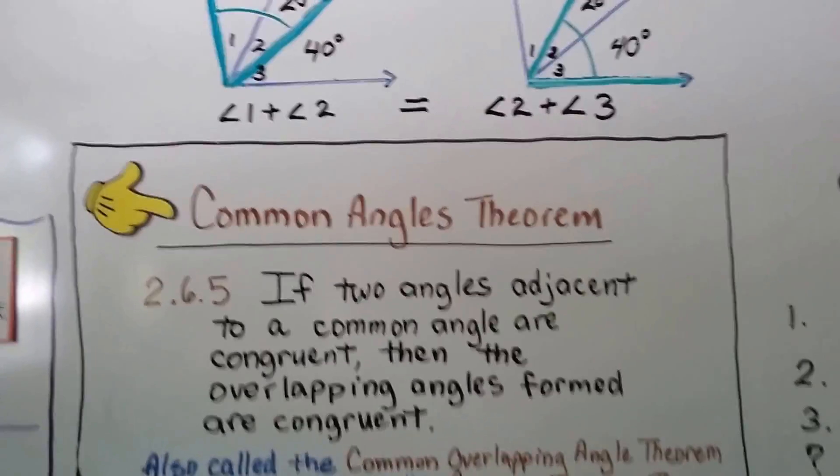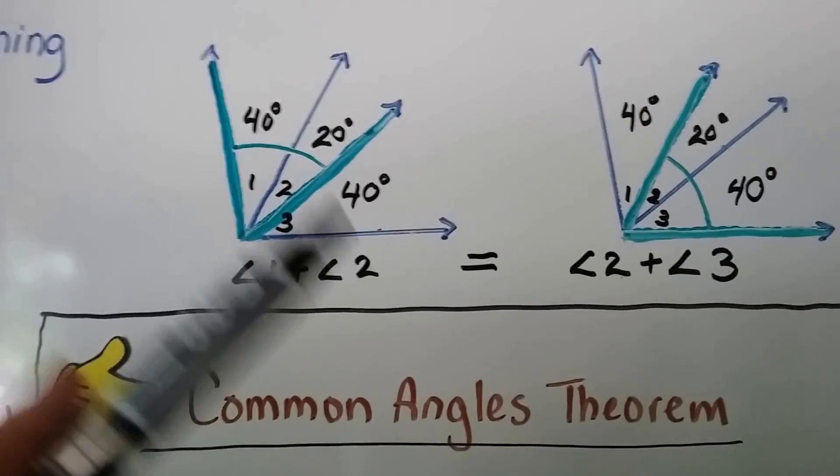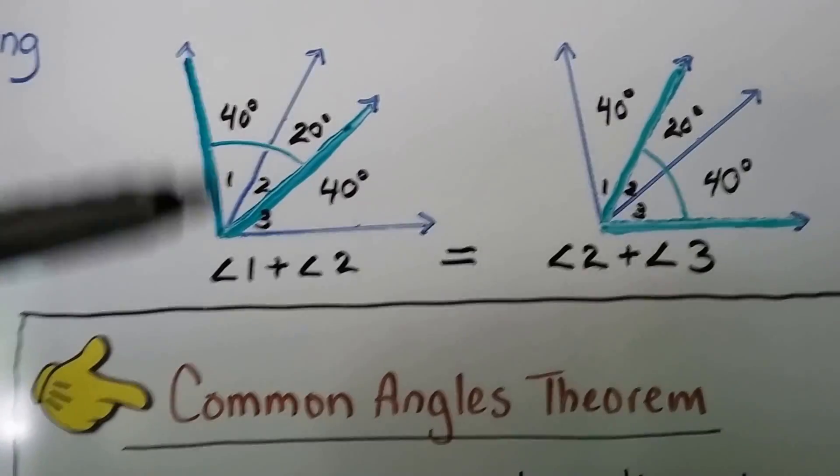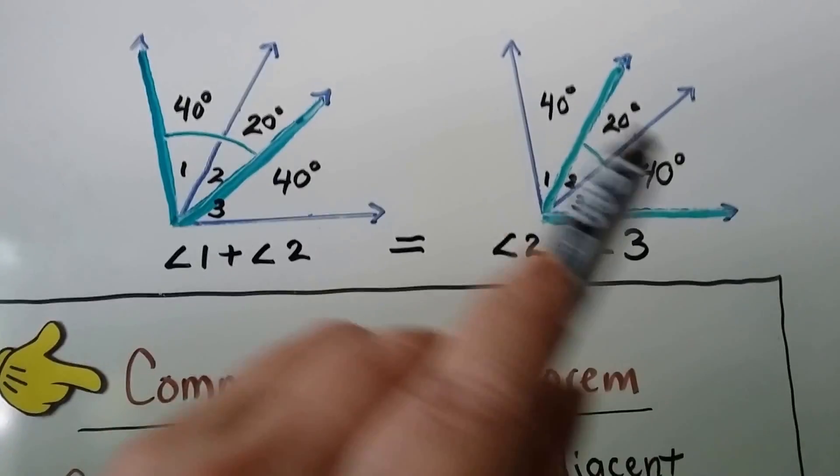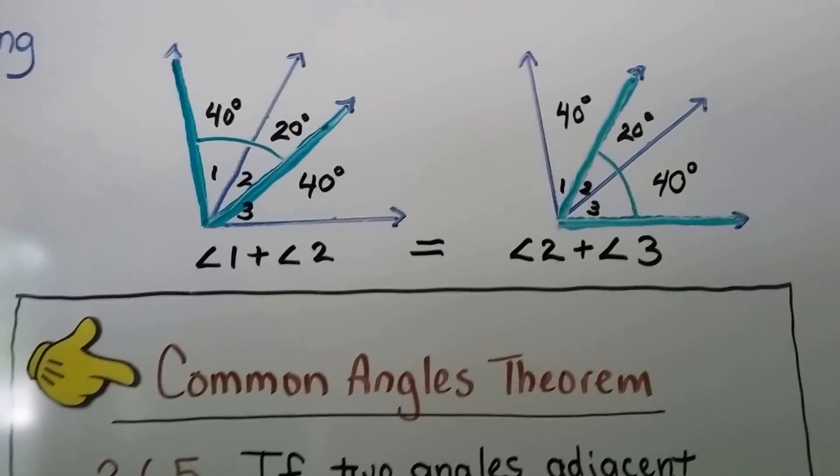So basically what this theorem is saying is here we've got three angles. We've got four rays. We've got one angle, two angle, three angle. And it's telling us that if we add these two angles together, it will equal these two angles. Angle one plus angle two equals angle two plus angle three.